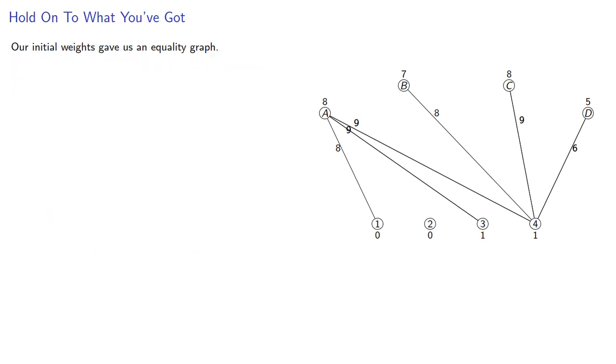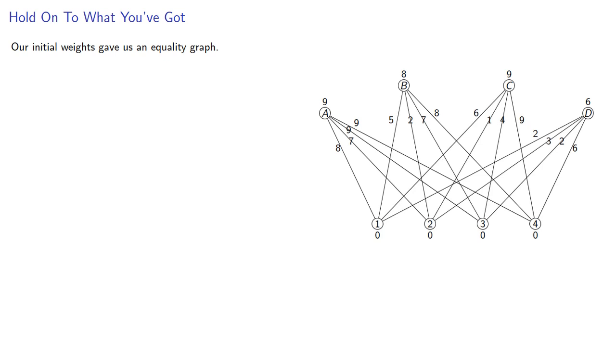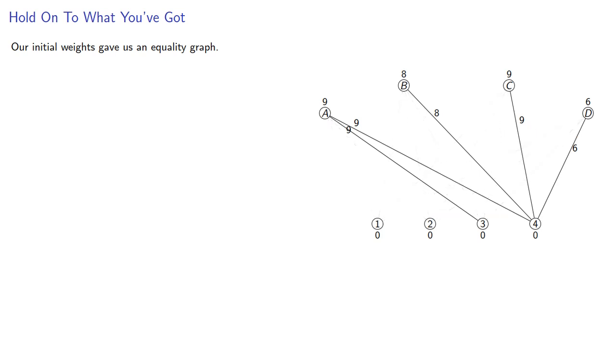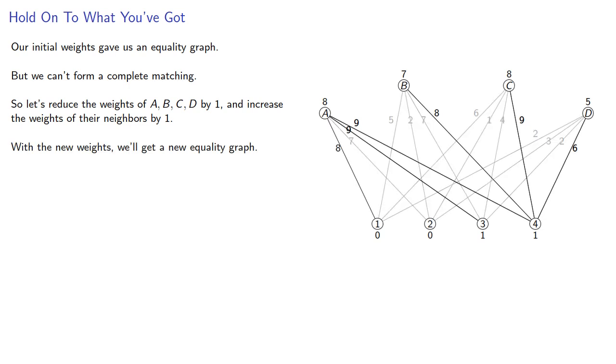So let's take a look at our graph again. Our initial weights gave us an equality graph, but we can't form a complete matching. So let's reduce the weights of vertices A, B, C, and D by one, and increase the weights of their neighbors by one. And with the new weights, we get a new equality graph.